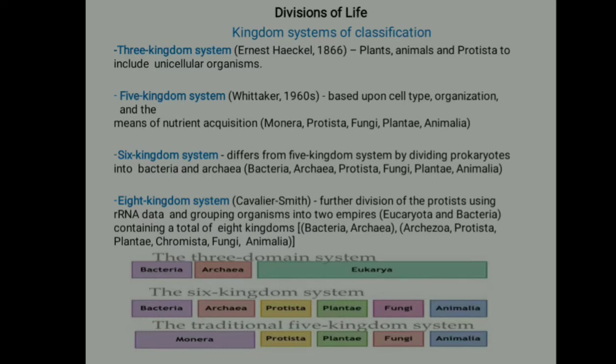The Six Kingdom system comprises Bacteria, Archaea, Protista, Plantae, Fungi, and Animalia. The traditional Five Kingdom system comprises Monera, Protista, Plantae, Fungi, and Animalia.